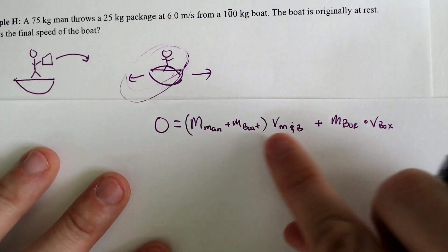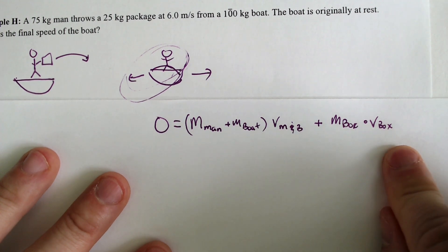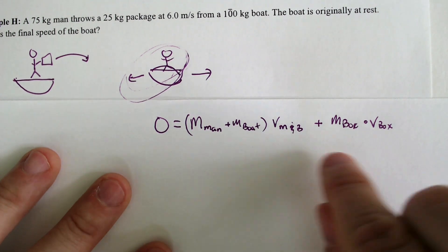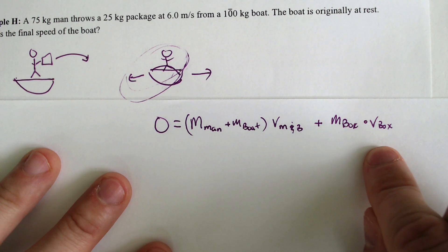That momentum will have to be added with the momentum of the box. Those put together would equal zero. So this is going to be in the positive direction because it's moving to the right.